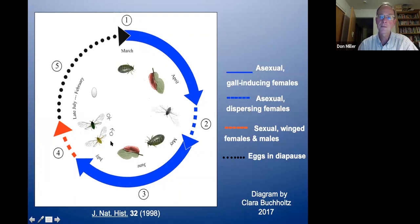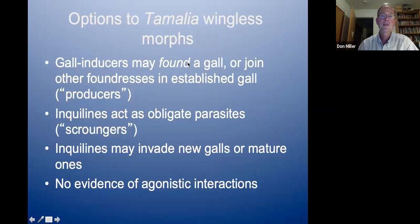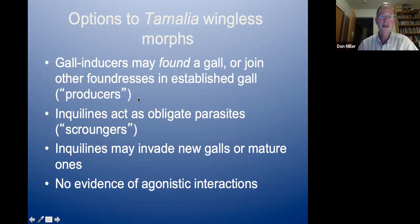Layered on top of this, the inquiline species tracks the timing of gall appearance and invites itself into these galls both in April and in June. For wingless Tamellia females acting as gall-inducers, they may found their own gall or join other foundresses — the gall-founders we might call producers. But inquilines are obligate parasites: they cannot induce a gall, they simply die if isolated. You might think of them as scroungers. They may invade new galls or mature galls, and I've never seen them fight — I've looked at tens of thousands of galls. They just seem to get along.